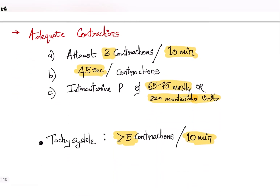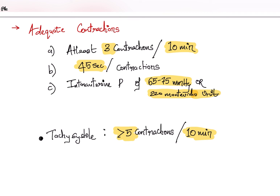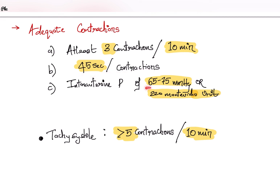Next we will talk about what is meant by adequate uterine contractions. These criteria must be satisfied: there must be at least 3 contractions per 10 minutes, each contraction lasting about 45 seconds, and an intra-uterine pressure of about 65–75 mmHg or 220 Montevideo units.